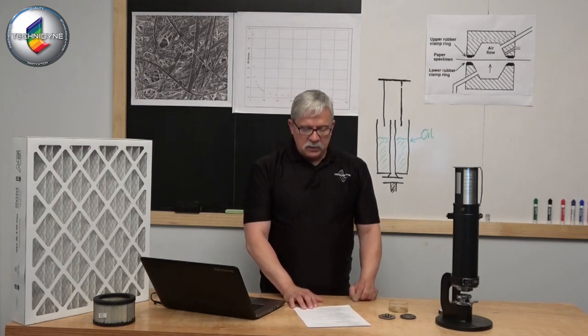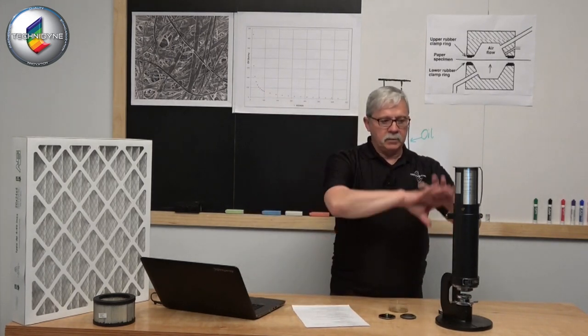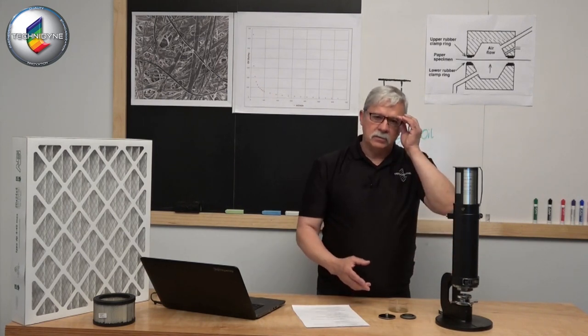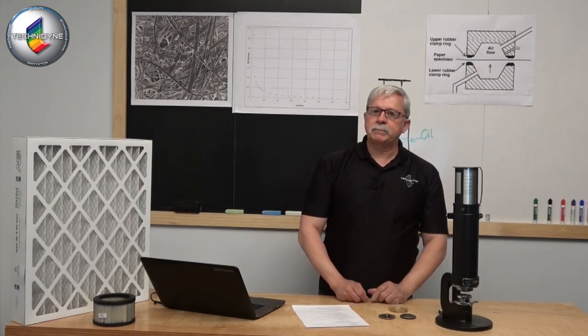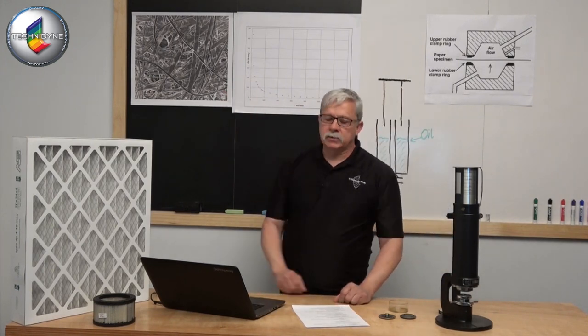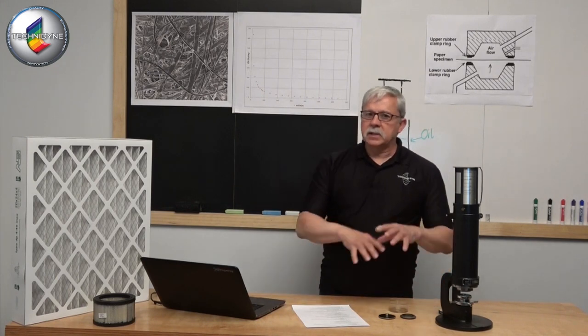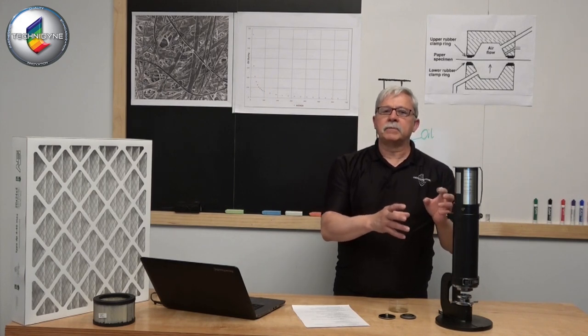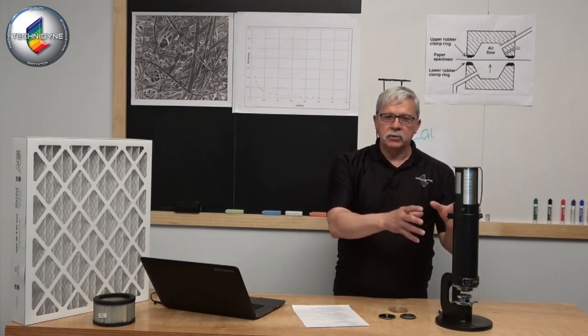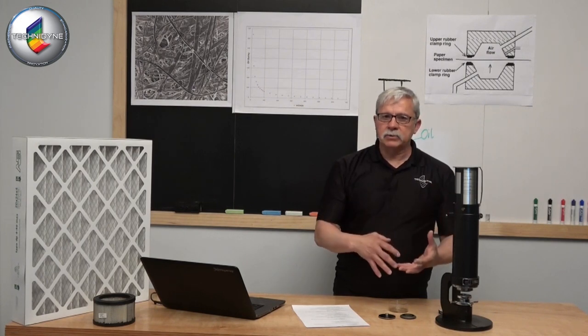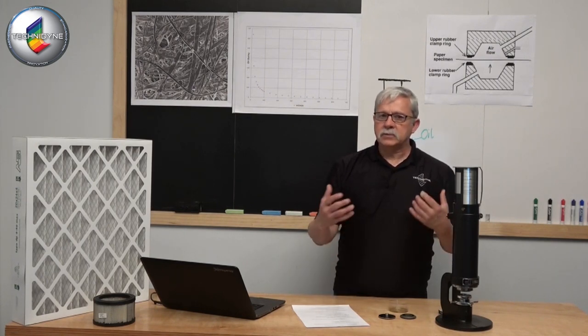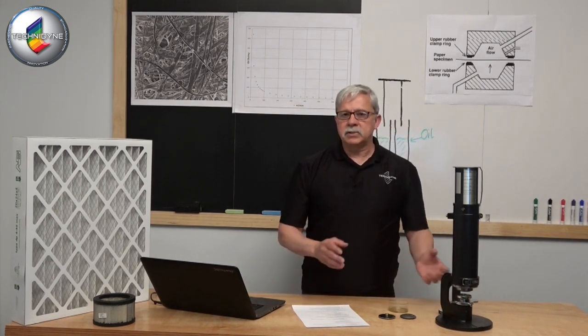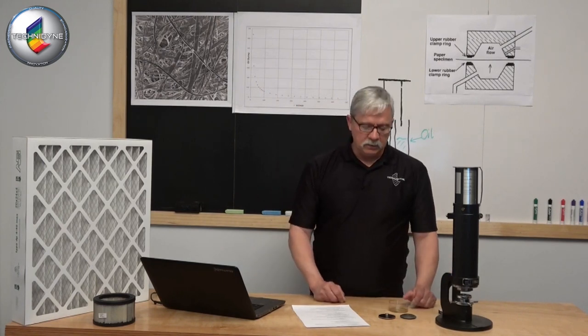So we've got a basic design that we can use for a number of different grades, take it out into the field, get information back to our production people, let them know what's happening to our structure. We have some more modern devices that we can use, other components that we can use in order to create a higher pressure drop differential across the sample. That's certainly the key in order to push that air through a tighter grade and still get that information out to the production people.